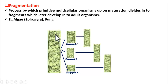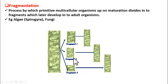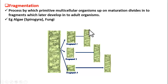Upon maturation, Spirogyra splits into several bits. Here you can see bit one, another bit, another bit — these bits are called fragments: Fragment 1, 2, 3. Only 3 fragments are shown here, but actually it can divide into any number of pieces. Each piece later develops into a fully grown adult Spirogyra.